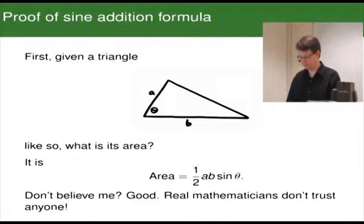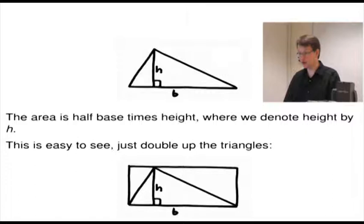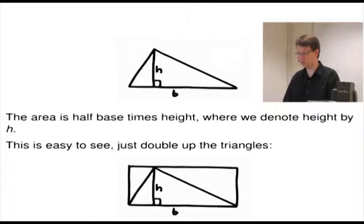Now, if you don't believe me, that's actually quite good because real mathematicians don't trust anyone — we actually have to see the proof. What we'll do is drop a perpendicular and calculate using the normal formula for area of a triangle. The area is half base times height, where I'll denote height by H. All you have to do is double up the triangles to get a rectangle; the area of the rectangle is H times B, and so it must be half base times height for the triangle.